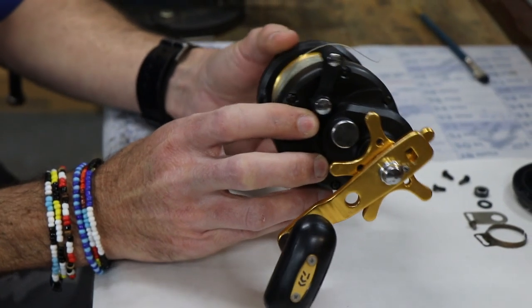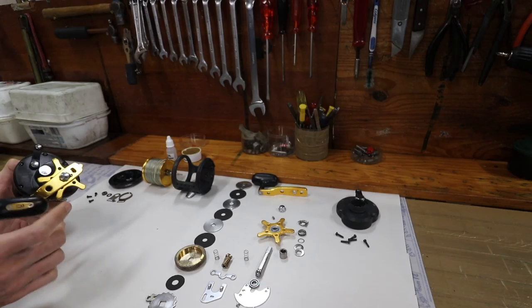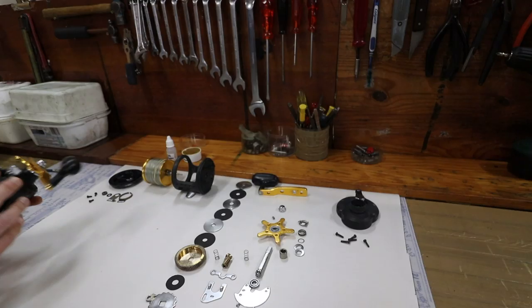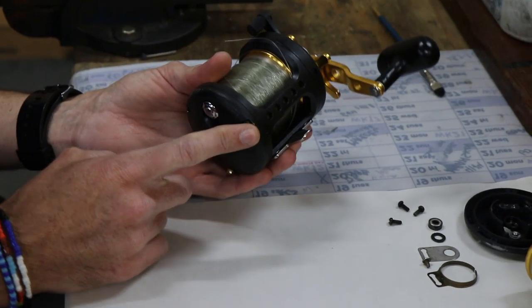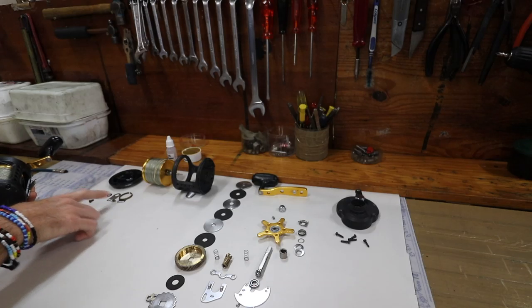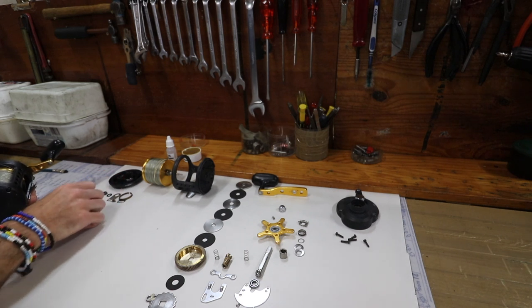This is a Saltist BG40 coming for a service by a customer. Basically he's a pedal ski guy, asked for a service. We strip the whole reel completely. Starting from the left hand side plate, strip it completely down to what you see here on a table to get into every part of the reel that you can find.